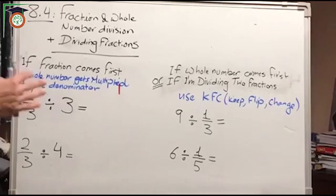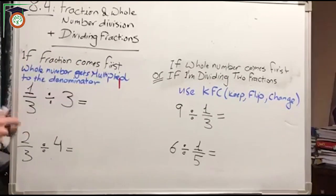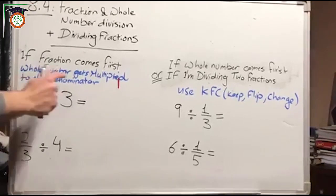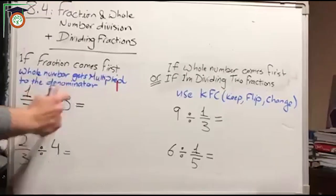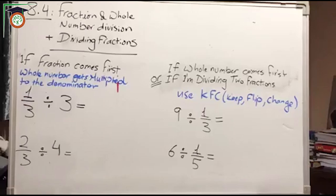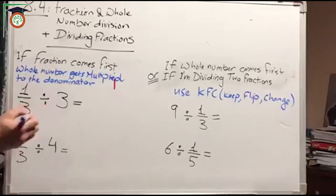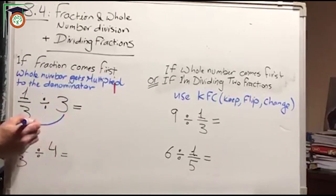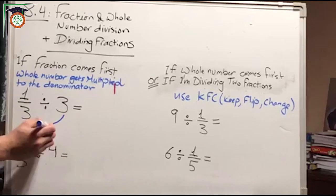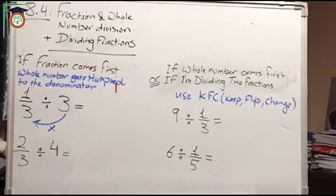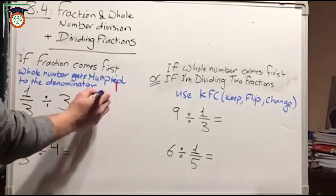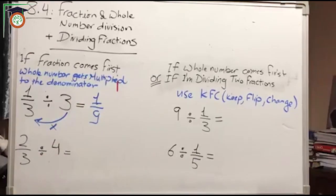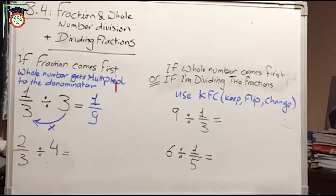Let's concentrate on the first case: if the fraction comes first. If I have a fraction and I'm dividing by a whole number, the whole number gets multiplied to the denominator. For example, I have 1 over 3 divided by 3 — the whole number goes to the denominator, so I get an answer of 1 over 9, because 3 multiplied by 3 is 9.